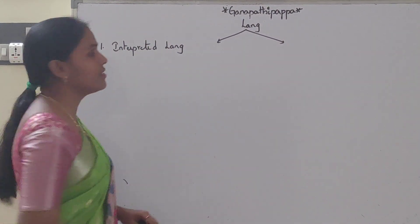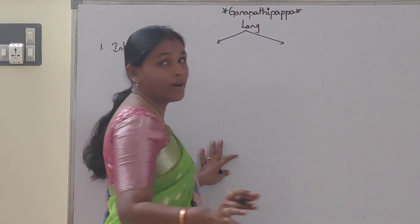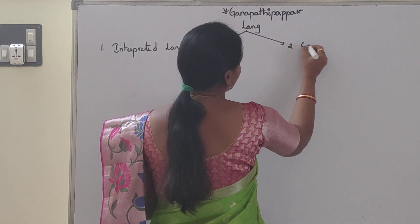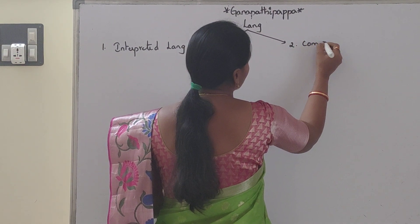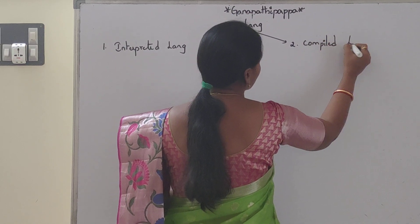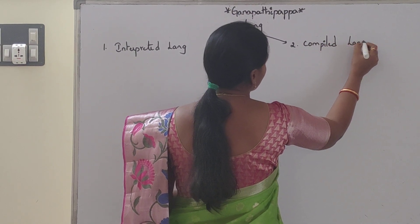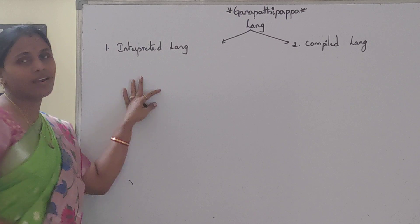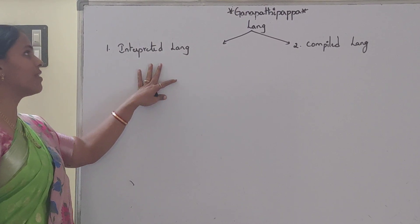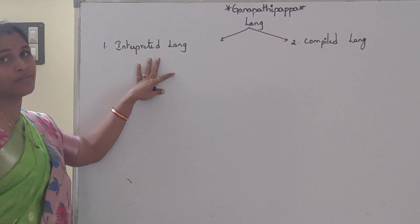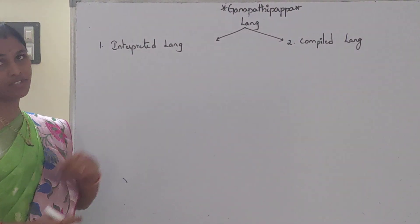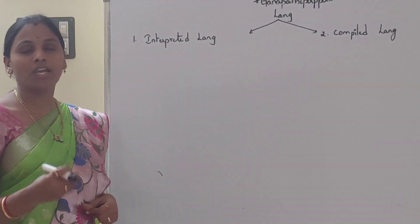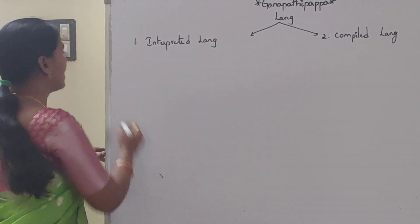The second one is compiled language. For interpreted language, interpreted means line-by-line execution. That means we are not required to compile explicitly.